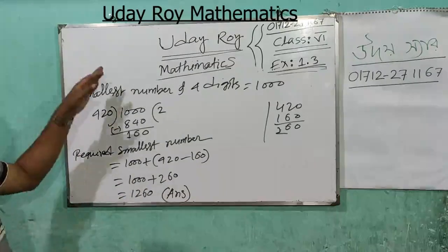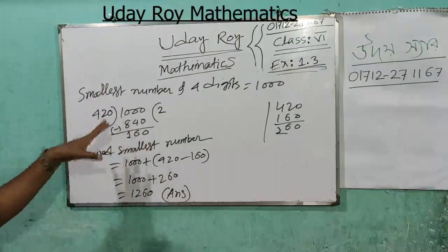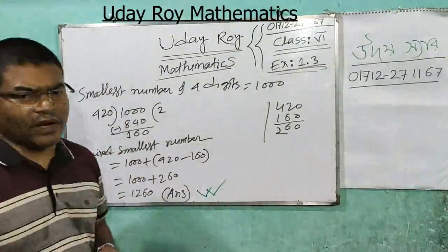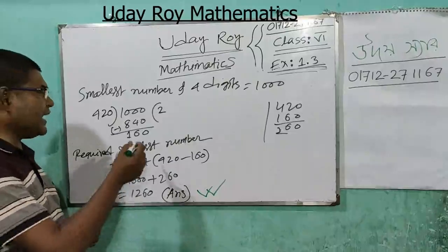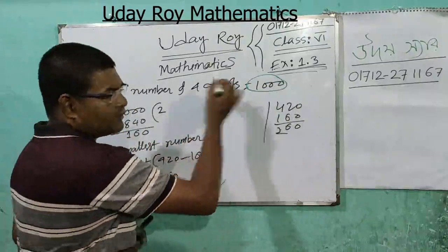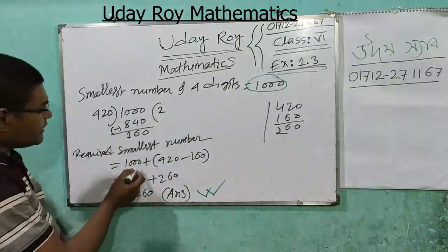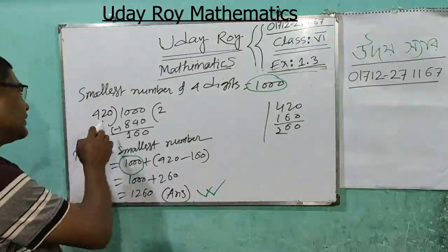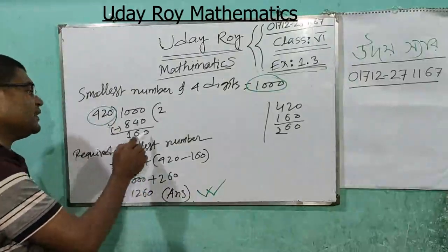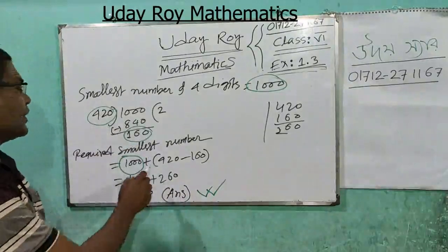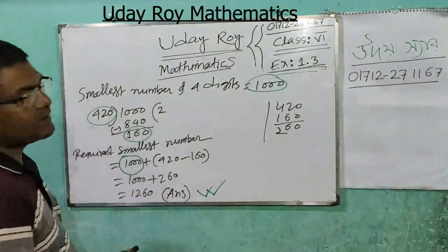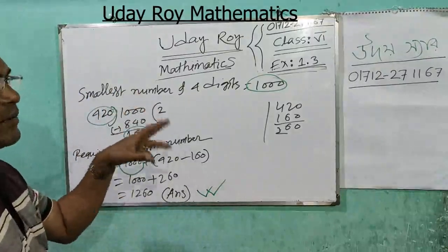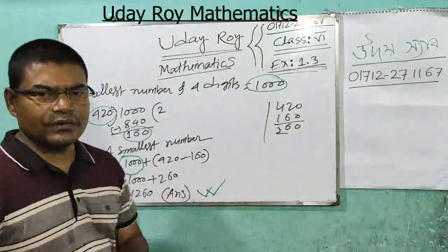For the smallest number, take the 4-digit number 1000 and subtract the remainder from 420. That is: 420 × 3 = 1260 minus 160 gives us the required answer. The problem is completed. Now we will do another problem.